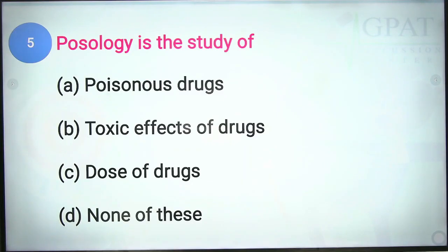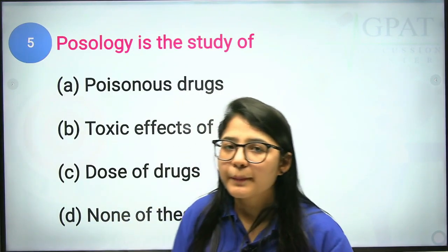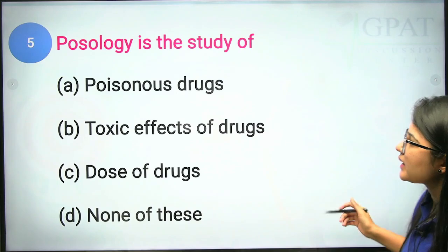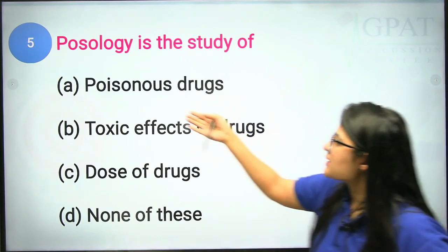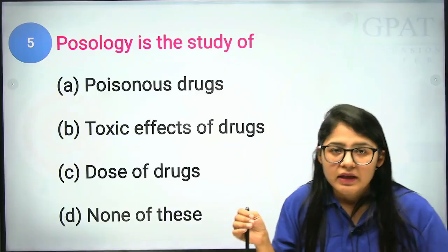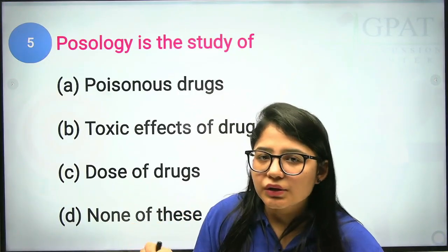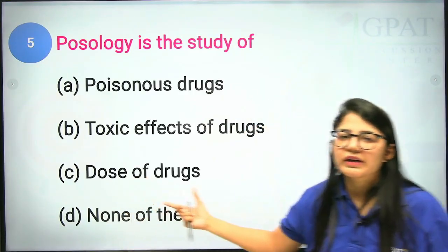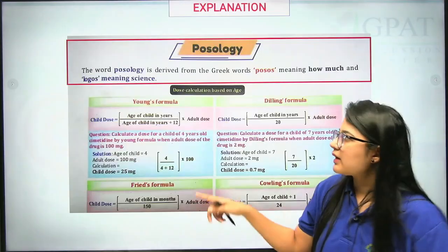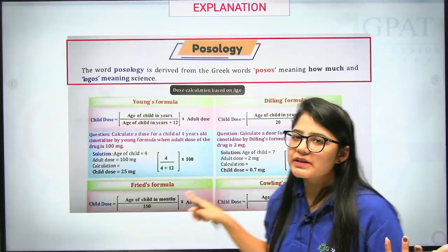The fifth question: posology is the study of what? Options include poisonous drug and toxic effect of drug — those two represent toxicology. Posology is the study of the dose of a drug. 'Posso' means how much or apart, and 'logos' means study or science. So the correct answer is the dose of a drug.